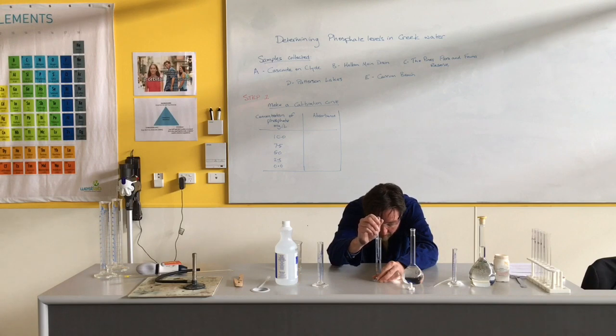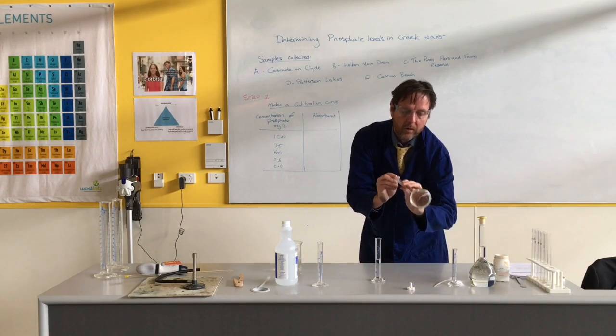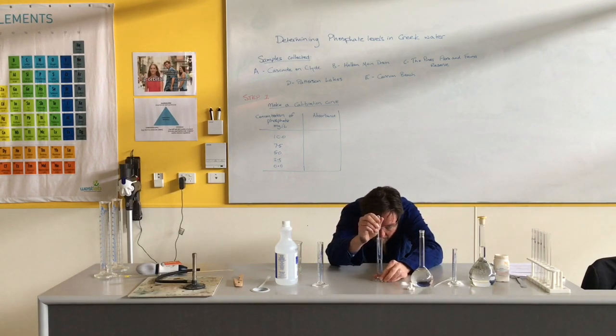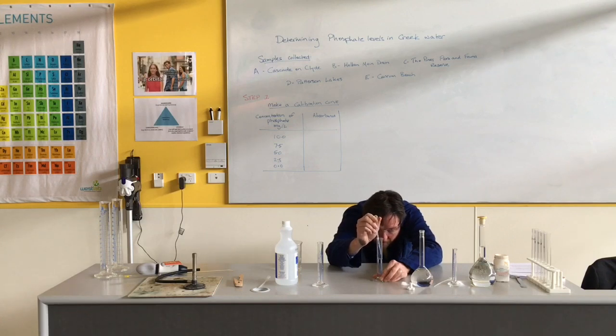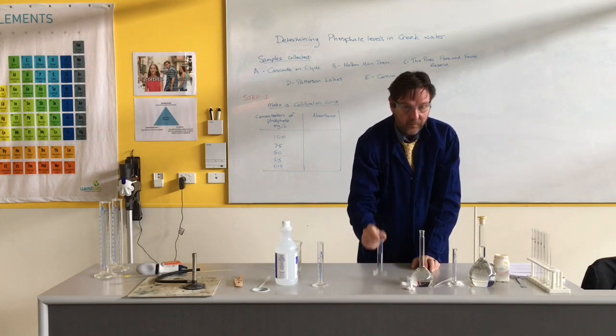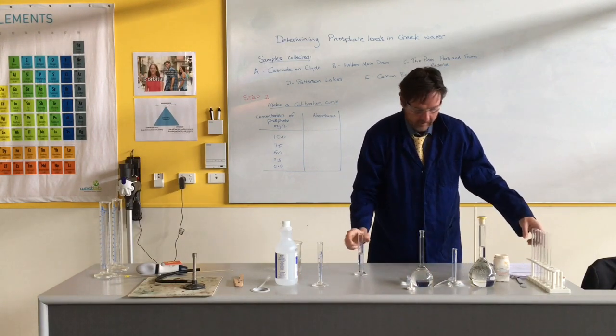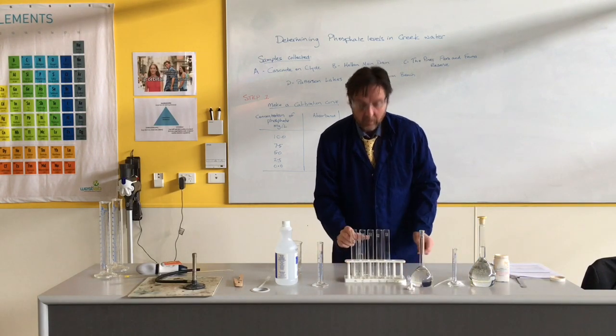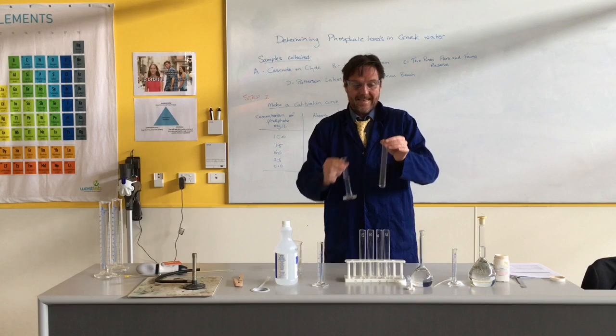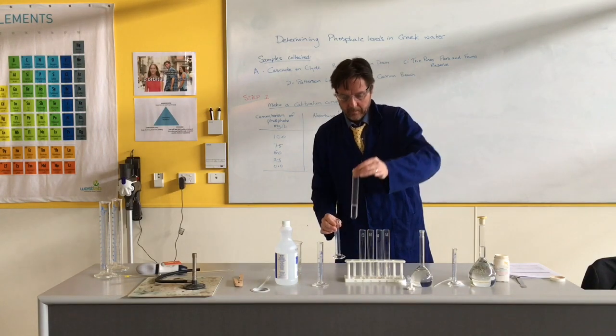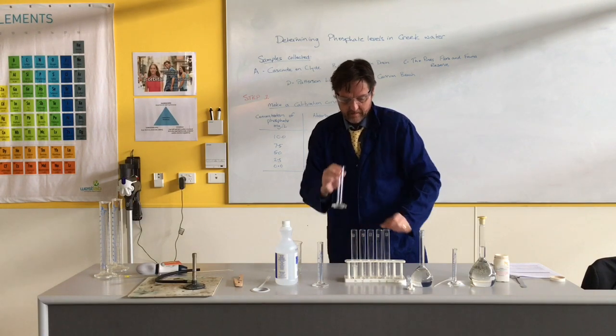20 mil, one more little squirt and we'll be there. Perfect. Okay, so this first one is going to be our 10 milligrams per litre of phosphate solution and that's going to go into here. Now I've already labeled that one. 10 milligrams per litre goes into there as is.